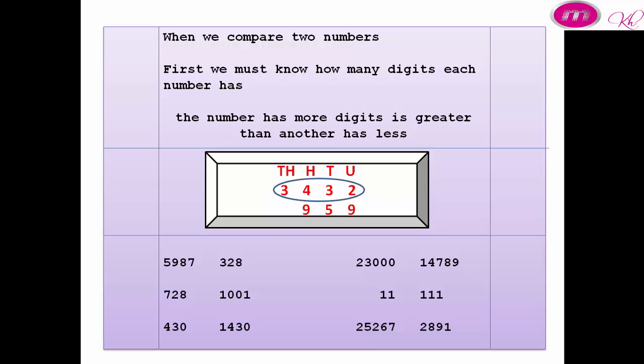More examples — more than, equal, or less than. Number A: five thousand nine hundred eighty-seven is more than three hundred twenty-eight. Number B: twenty-three thousand is more than fourteen thousand seven hundred eighty-nine. Number C: seven hundred twenty-eight is less than one thousand and one. Number D: eleven is less than one hundred and eleven. Number E: four hundred and thirty is less than one thousand four hundred and thirty. Number F: twenty-five thousand two hundred sixty-seven is more than two thousand eight hundred ninety-one.